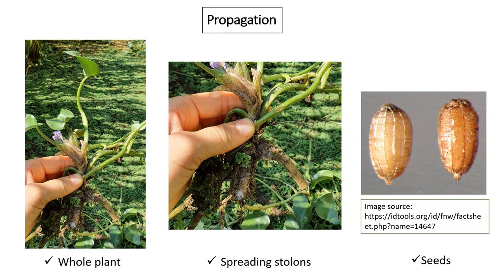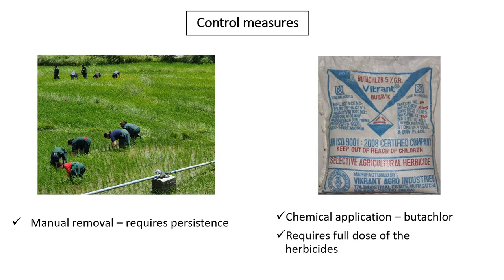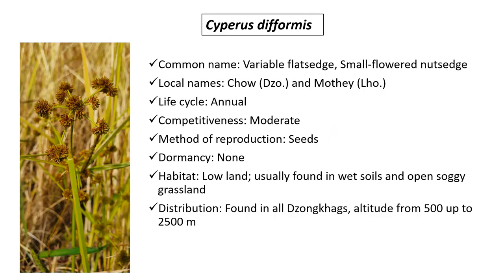It can propagate through the whole plant, by spreading stolons, and through seeds. It can be controlled manually or by application of chemical herbicides such as Butachlor.